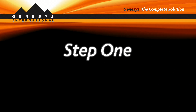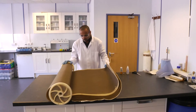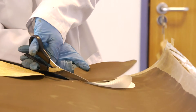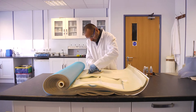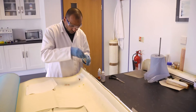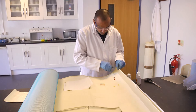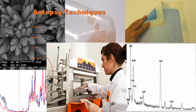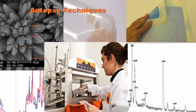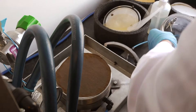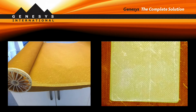Step 1: Identifying the foulant. Foulant identification is key to efficient cleaning. Our autopsy of membranes and cartridge filters will identify foulants and also the most effective cleaning procedure. The autopsy uses in-depth analytical techniques to identify deposits. Membrane samples are removed and a flat sheet test rig is used to determine the most efficient cleaning products.